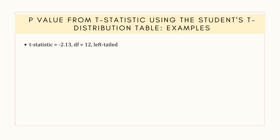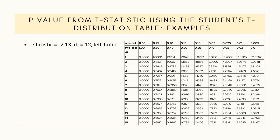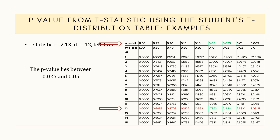In the t-distribution table, first select a row for the degrees of freedom value of 12. Then select the cells within which the absolute value of the t-statistic, which is 2.13, lies. Now select the column values associated with these two cells, which provides the range of the p-value.